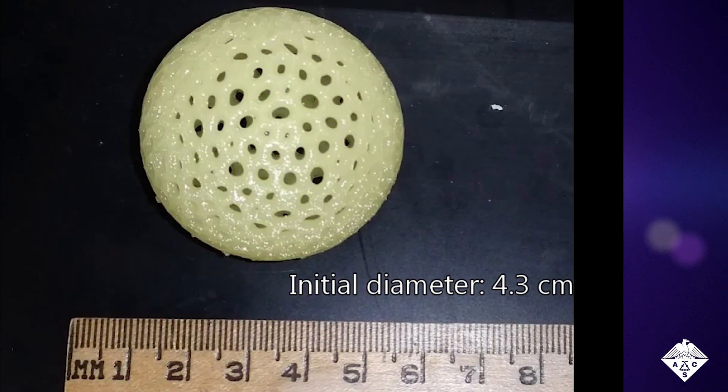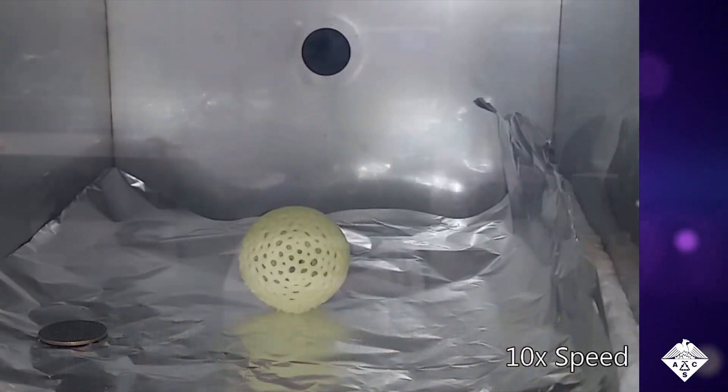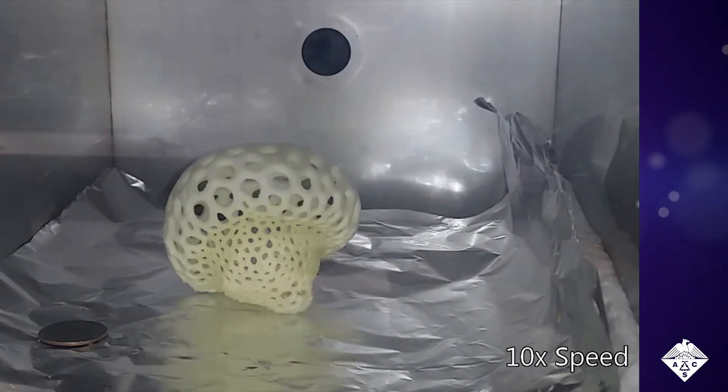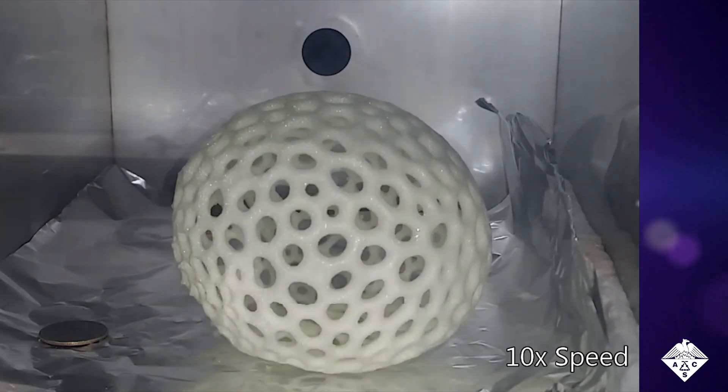The researchers tested many different resin formulations before they found the ideal one, which they used to 3D print a hollow lattice sphere. Then they heated the sphere in an oven, causing a volatile component of the resin to bubble out as a gas.